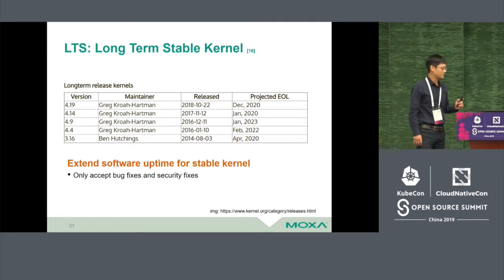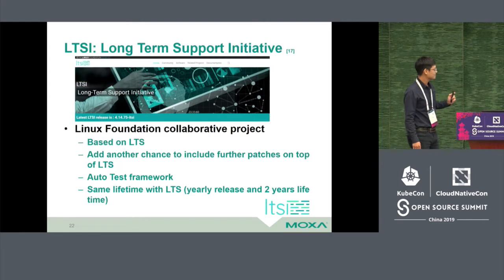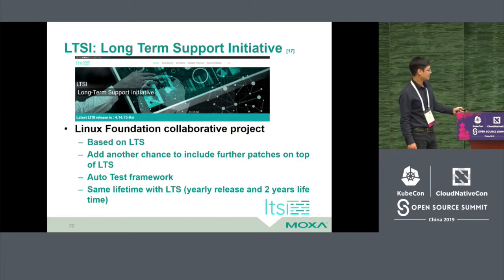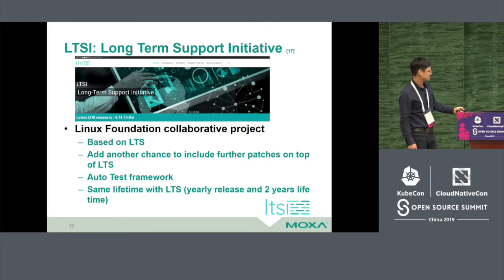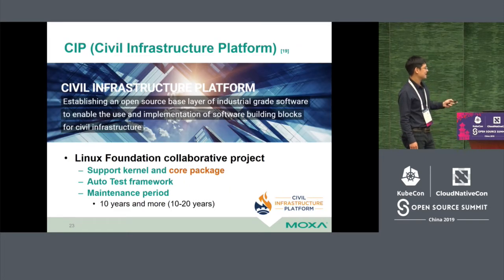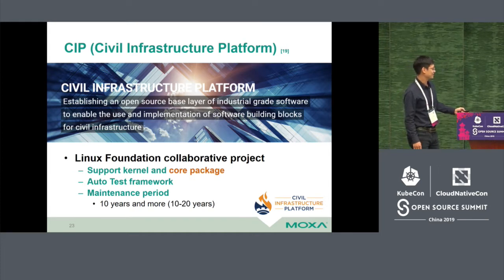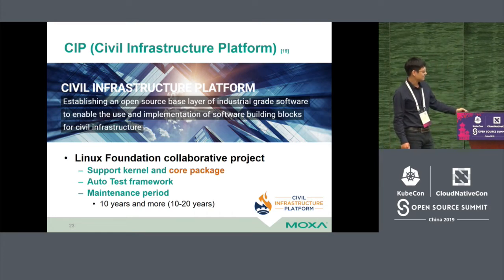Six years is not enough for us, especially in industrial applications. So we have another choice: LTSI, the Long-Term Support Initiative. This is a Linux Foundation collaborative project based on LTS that has an auto-test framework and adds new features inside the kernel. The next option is CIP, the Civil Infrastructure Platform, also a Linux Foundation collaborative project. We joined this project because we want to support the Linux kernel for more than 10 years. It has a support strategy, auto-test framework, and the goal of maintaining the Linux kernel for more than 10 years.